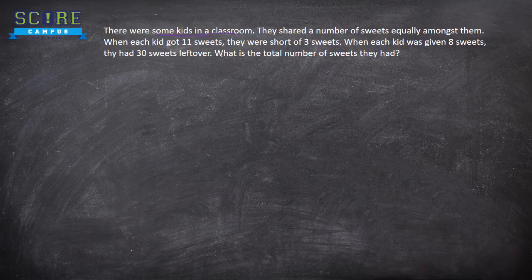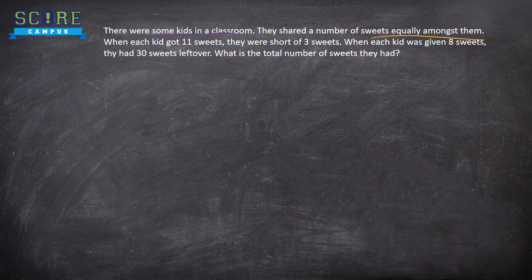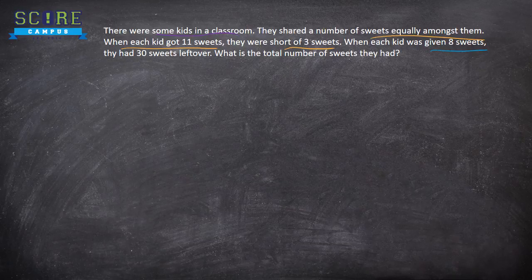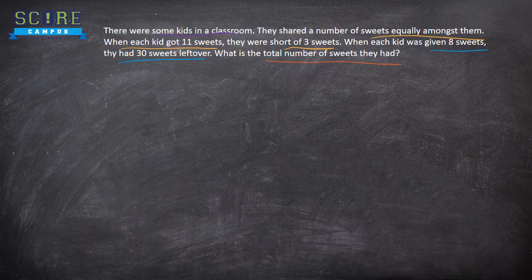There were some kids in the classroom. They shared a number of sweets equally amongst them. When each kid got 11 sweets, they were short of 3 sweets. When each kid was given 8 sweets, they had 30 sweets left over. And the question is, find the total number of sweets they had.